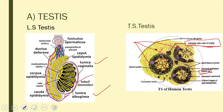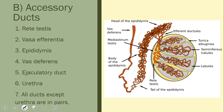Now we look at the accessory ducts. At the posterior end of the seminiferous tubules, a network forms called the rete testis. These join together to form 15 to 20 vasa efferentia (efferent ductules), which carry sperms from the testes to the epididymis. The epididymis is a long coiled tube divided into three parts: the head, body, and tail.